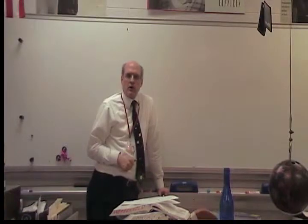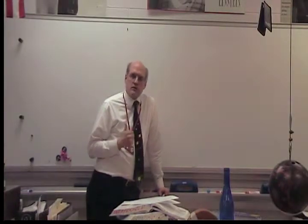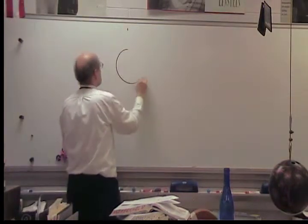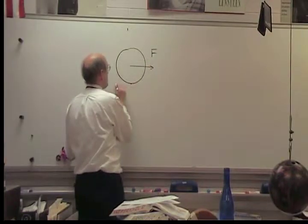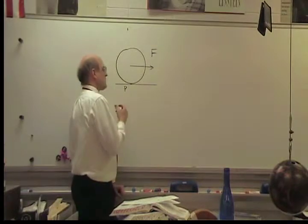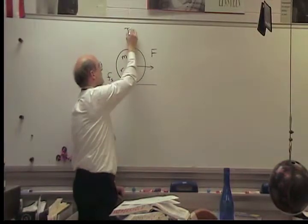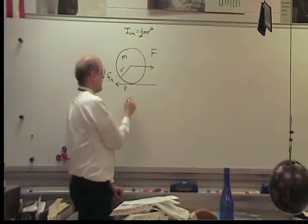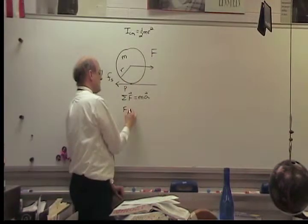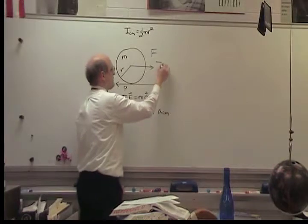Now let's take a look at a rolling problem where we apply a force at the center of mass of a rolling disk and find the force of static friction as well as the acceleration of the center of mass. We're applying force at the center of mass and want to know the static friction at point of contact P. Rolling without slipping, I'll guess the force of static friction acts to the left. Using Newton's second law of translation: F minus the force of static friction equals m·A_cm.